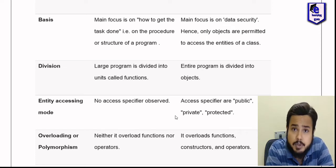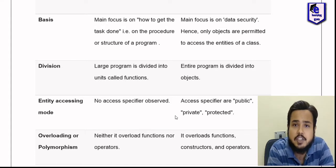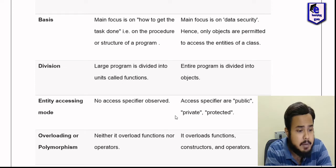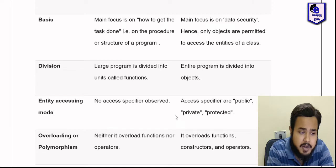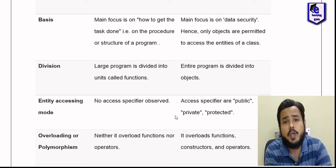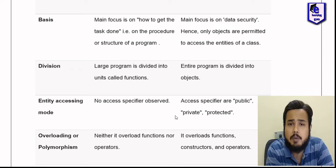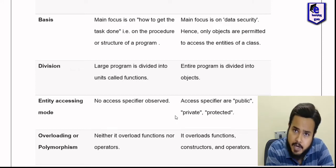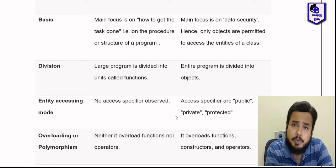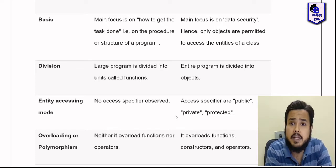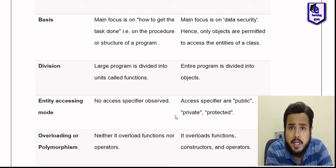Access specifier observed. No access specifier — public, private, protected. Access specifier in object-oriented programming. Public, private, protected — private is not non-private.